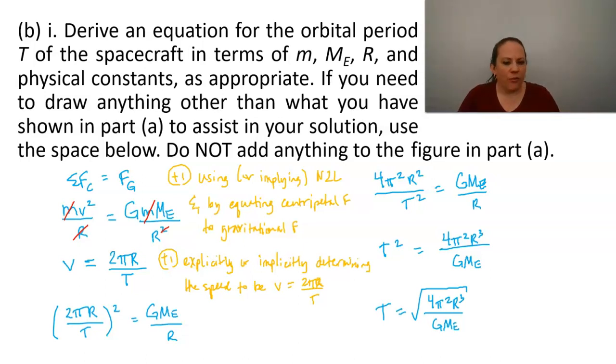And our final point is going to come for a correct answer algebraically equivalent or algebraically equal to our final expression here, which means that we can also get a point for t squared equals 4 pi squared r cubed over gme because that's algebraically equivalent to that final answer.